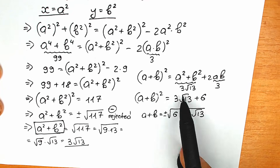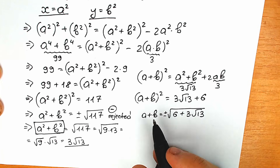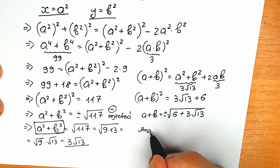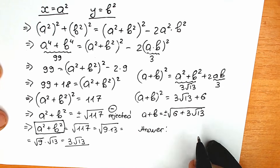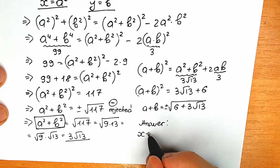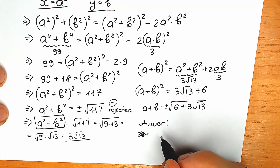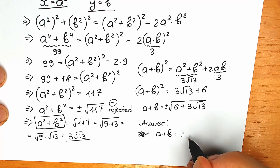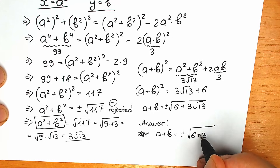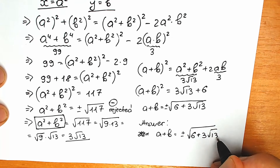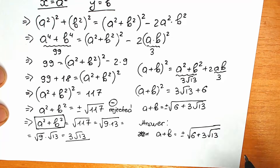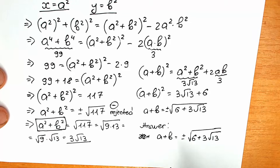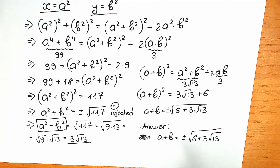A lot of students forget about it, but we need to put plus or minus here, because we can raise a negative value to the second power and get the same result. So the correct answer: a plus b equals plus or minus the square root of 6 plus 3 square root of 13. This is our answer to this question.